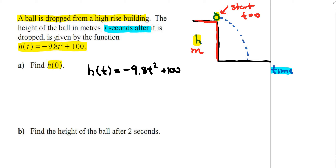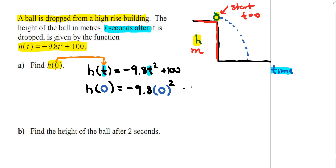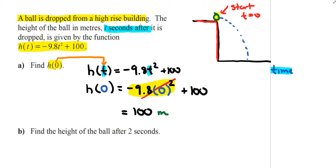Mathematically, the 0 replaces all the t variables. So h(0) = -9.8(0)² + 100. The term -9.8 times 0 squared equals 0, since 0 times anything is 0. You're left with 100, so the height of the building is 100 meters. Going back to the diagram, the height of the building shown in blue is 100 meters when time equals 0.